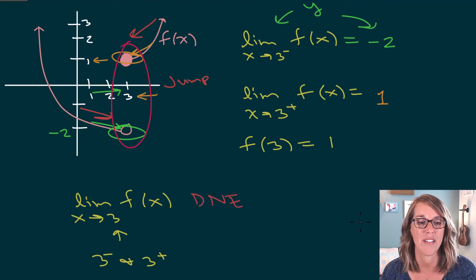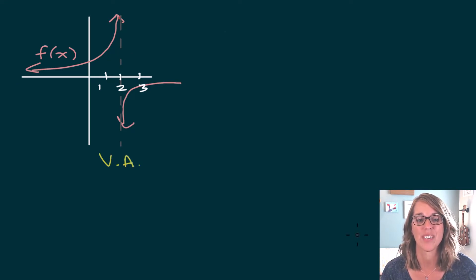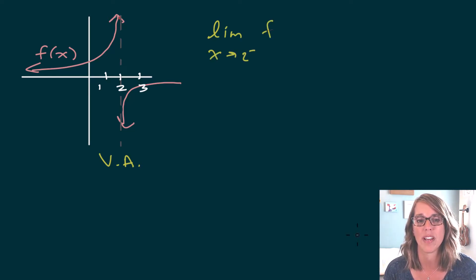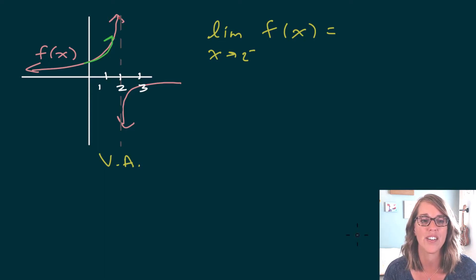Let's take a look at another graph. This graph has an infinite discontinuity at 2, also known as a vertical asymptote. This vertical asymptote is going to give me some infinite behavior when evaluating some limits. Let's look at the limit as x approaches 2 from the left. As I'm approaching from the left of my asymptote, I pick up on this side of my graph, and notice that this is heading towards infinity. So this limit is equal to infinity.